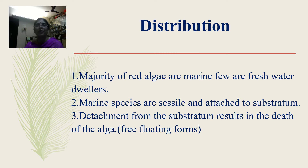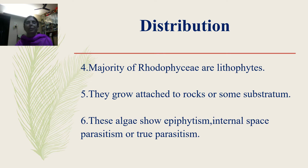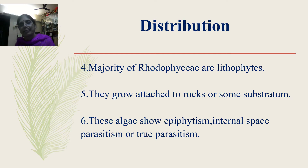Let us study the distribution of red algae. The majority of red algae are marine; few are freshwater. Marine species are sessile and attached to the substratum — detachment from the substratum results in the death of the alga, so free-floating forms mean that they are dead. The majority of rhodophytes are lithophytes, derived from the word 'lithos,' meaning rock — so they grow attached to rocks of the substratum.